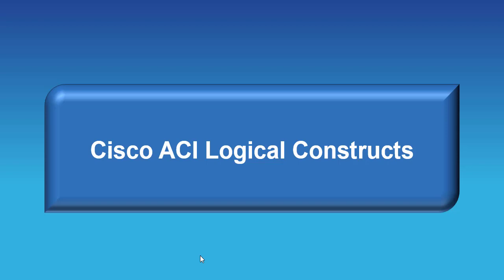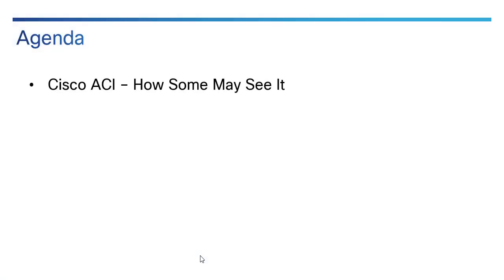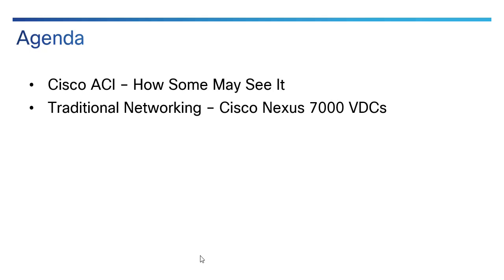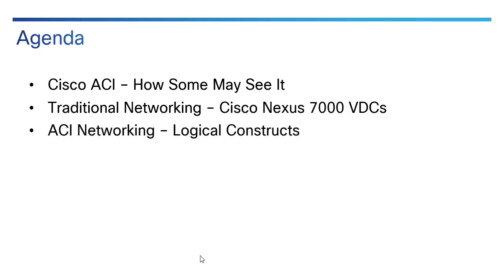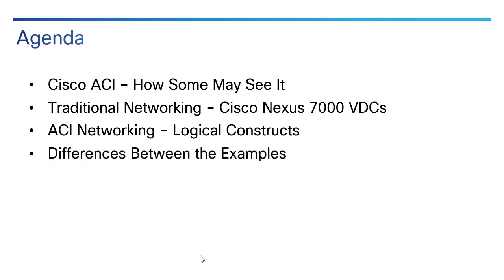It can be a little confusing, so I'm trying to wrap this around something familiar. We'll cover how some people see Cisco ACI, how it compares to traditional networking using the Cisco Nexus 7000 virtual device context as a jumping-off place, then the actual constructs, the differences between a Nexus 7000 VDC and ACI, and then a wrap-up.